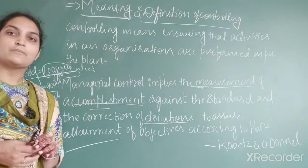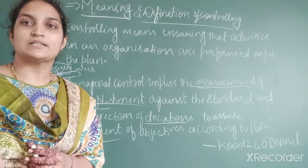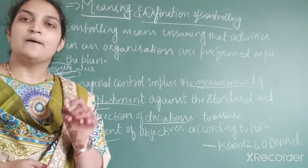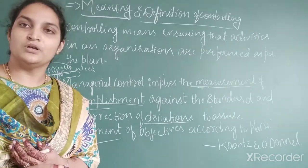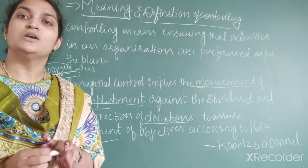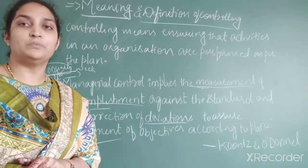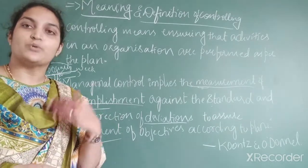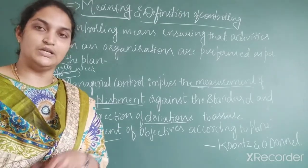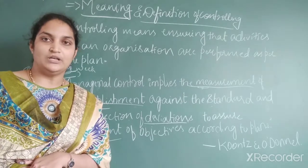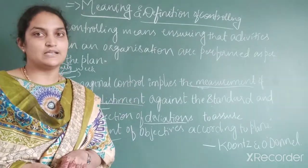So controlling is: checking the current performance of an individual against the standard in the plans, with a view to ensure adequate progress in the activities as well as the satisfactory performance of an individual. In order to know the satisfactory performance of an individual, this function is exercised by the management.